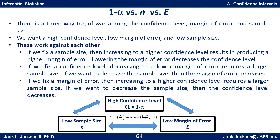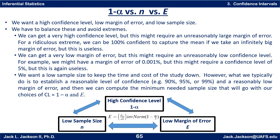We have to balance this to avoid extremes. We can get a very high confidence level, but this might require an unreasonably large margin of error. For a ridiculous extreme, we could be 100% confident of capturing the mean if we use an infinitely big margin of error — but this is useless. For example, I can say I'm 100% confident that the average weight of 7th grade boys is somewhere between 0 and 2,000 pounds. That's probably true, but not useful. On the other hand, a very low margin of error might require an unreasonably low confidence level, such as 5% — again, useless. We need balance.